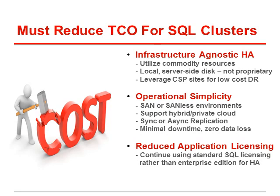Cost is a key factor, so the solution must be infrastructure-agnostic: able to use commodity resources and leverage CSP sites for low-cost DR. On operational simplicity — DBAs treat the SAN almost like a four-letter word because any storage change requires engaging a separate SAN team with slow turnaround times. The simplest approach is taking two servers and leveraging the storage already inside the machine, or provisioning two servers in the cloud and leveraging the storage attached to each — eliminating the SAN and all its associated infrastructure entirely.